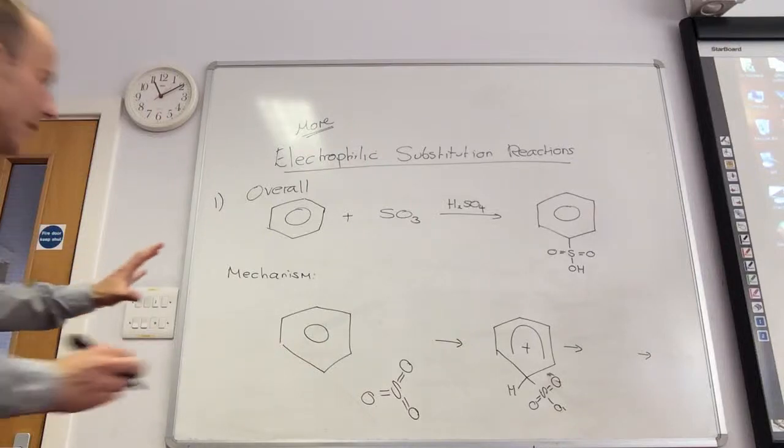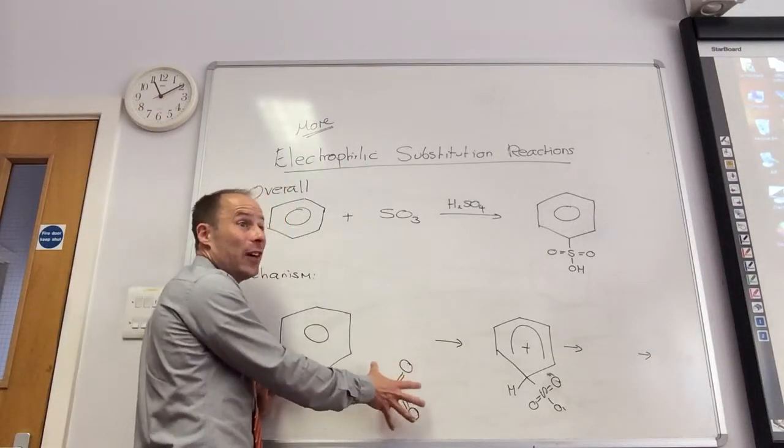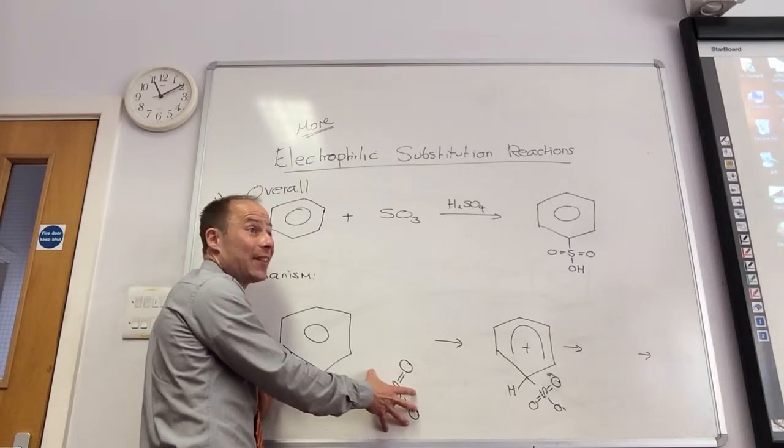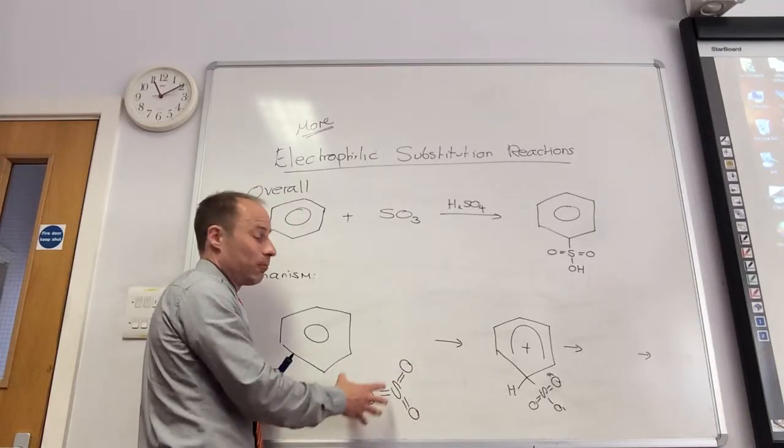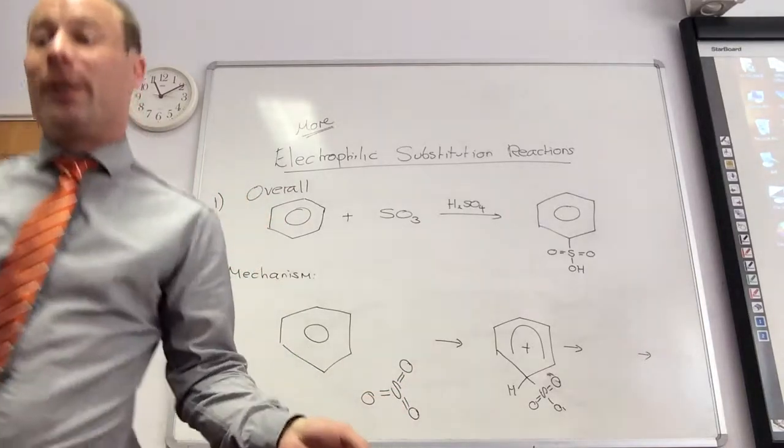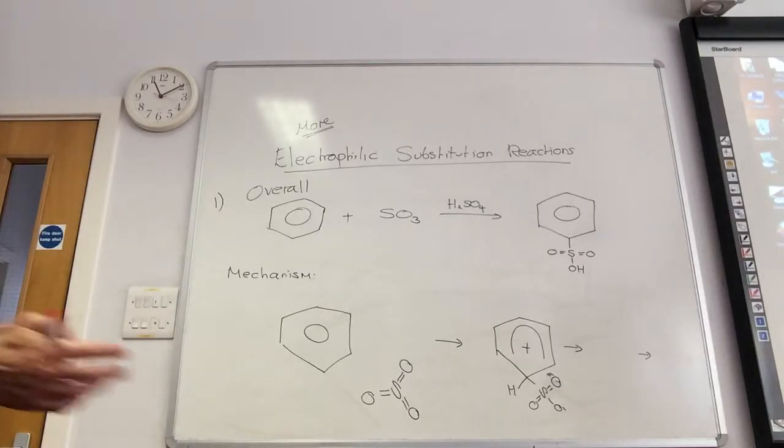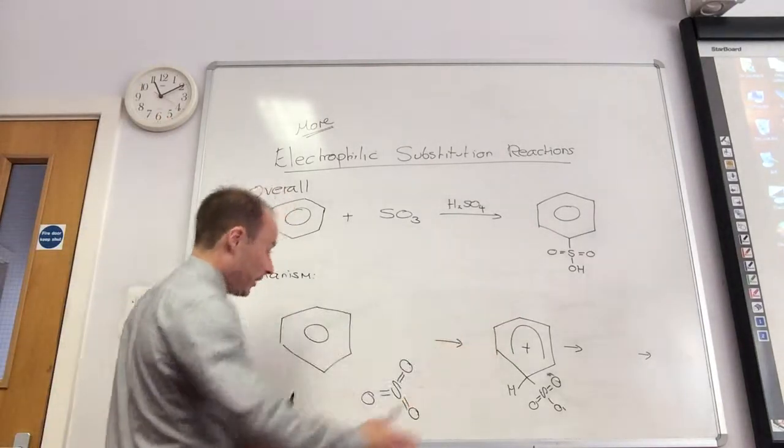So the first thing, this is an electrophile. What charge has this got to have somewhere on it? Positive. Which bit's going to be positive? Brilliant. Sulfur.